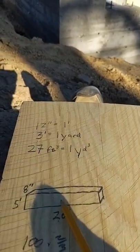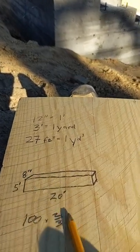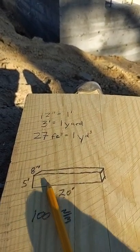So 27 cubic feet per yard. If you're building a foundation like this, break it up into pieces. Let's say one piece of the footing is 20 foot by 5 foot by 8 inches.